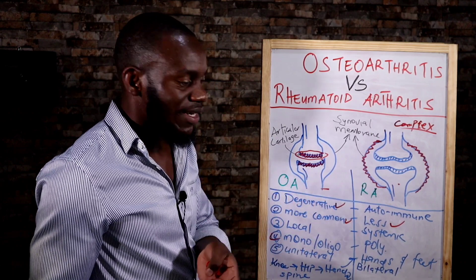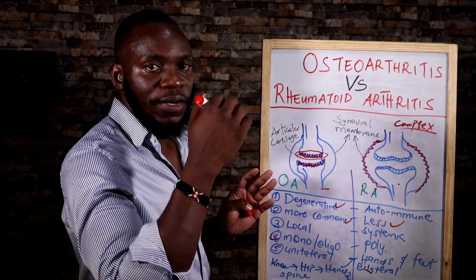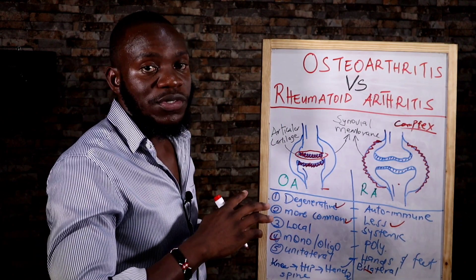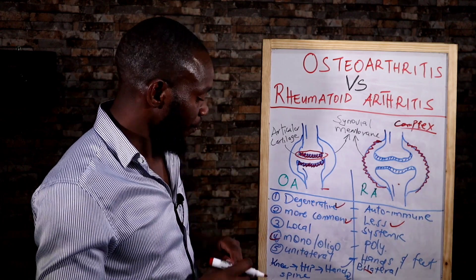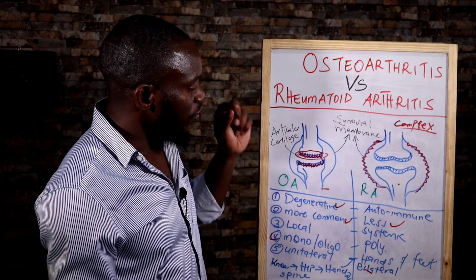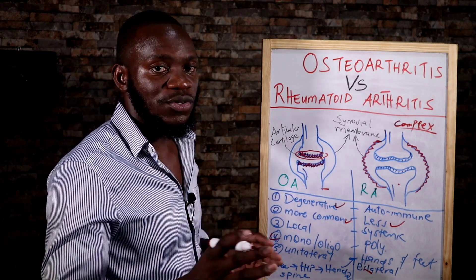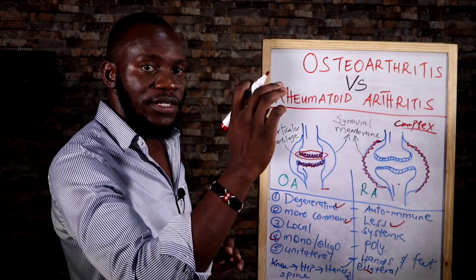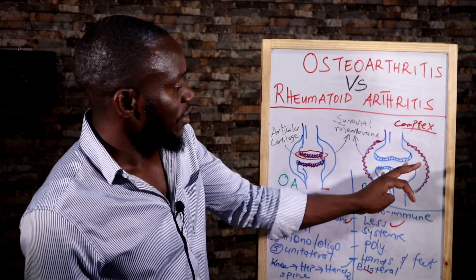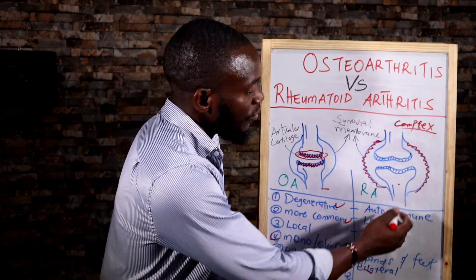Osteoarthritis is unilateral, attacking one side, whereas rheumatoid arthritis is bilateral, attacking both sides — for example, both hands — because it is not specific to one joint. Finally, osteoarthritis progresses from the knee to the hip, to the hand, and then the spine. Rheumatoid arthritis primarily affects the hands and the feet.